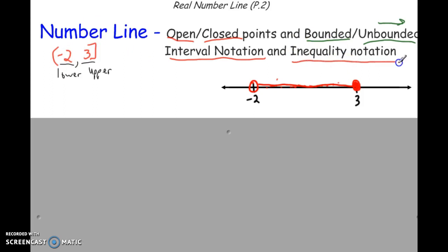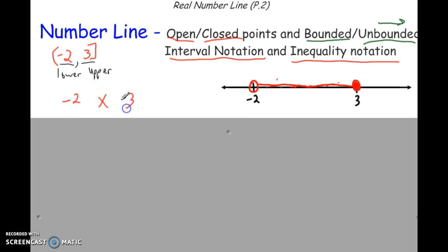Finally, inequality notation — you might be familiar with this. For a segment, x would be in the middle: negative 2, then x, then 3. We have to be careful — it's a closed circle at 3, so there would be a line underneath, which indicates less than or equal to 3.